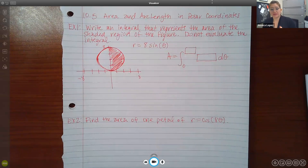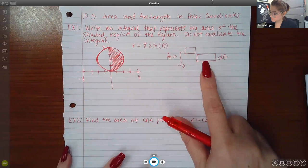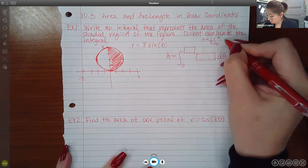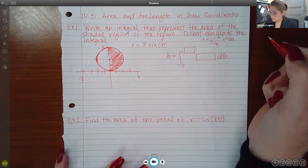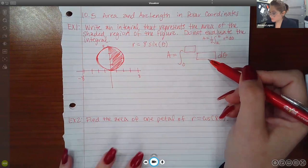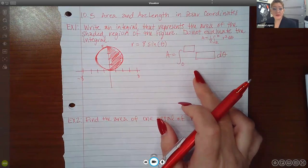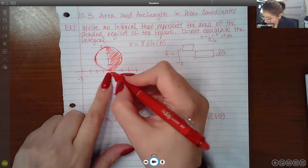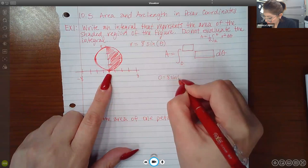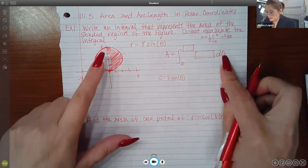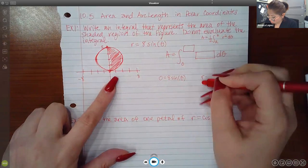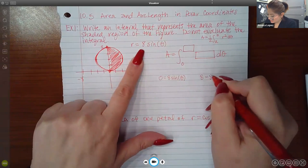The problem says write an integral that represents the area of the shaded region of the figure, but do not evaluate the integral. I know there's got to be some function r squared, because the formula is A equals one half from a to b, and then whatever your r is squared, d theta. They told me the bottom bound is zero, but where did that come from, and how do I find the top bound?